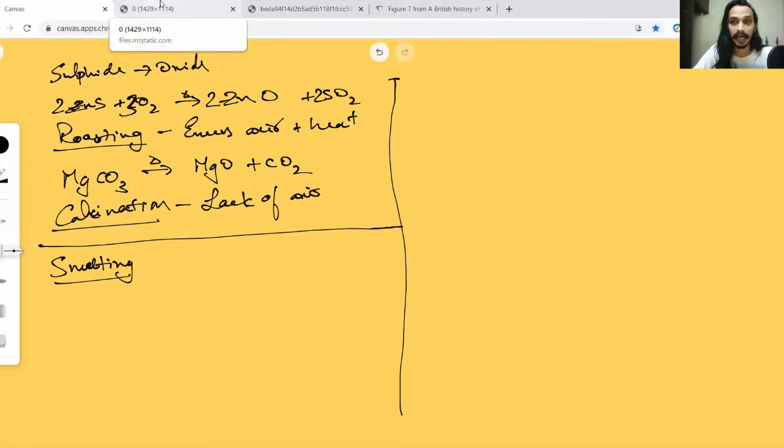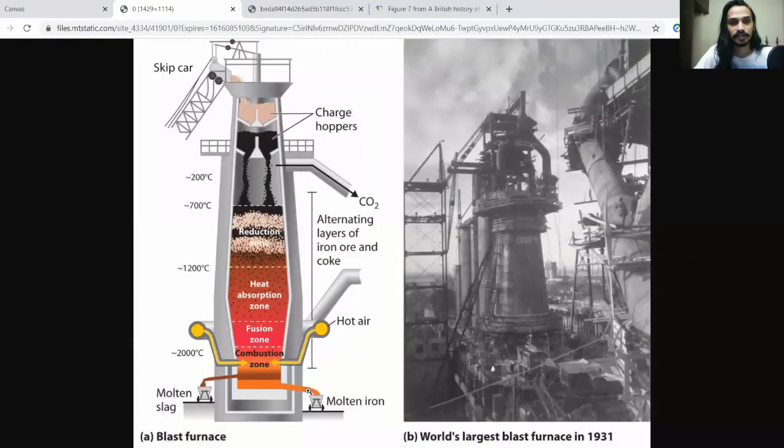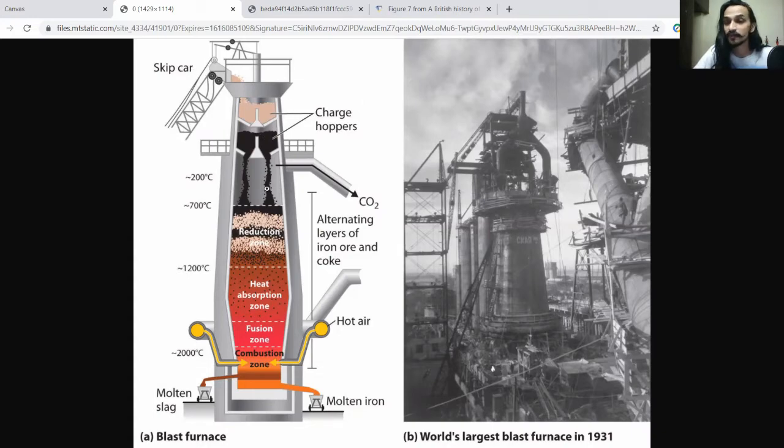For doing that we use something called a blast furnace. Here I'm showing an image of a blast furnace. This skip car is going to add two things from the top: it's going to add the fuel and the ore both at the same time through these charge hoppers. Since both are added together, they will be forming layers of your ore and your fuel. Your fuel is generally coke, which is nothing but a form of coal, and your ore could be iron.